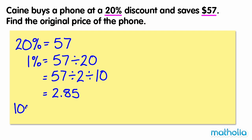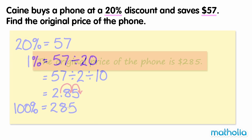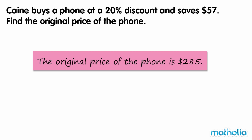To find 100% of the price, we multiply by 100. The original price of the phone is $285.